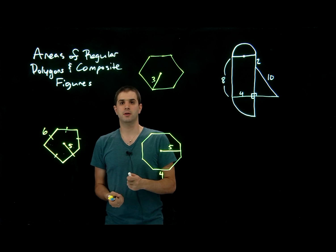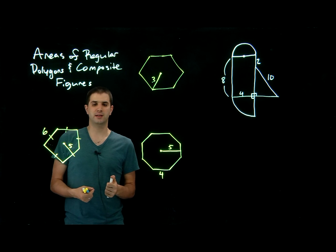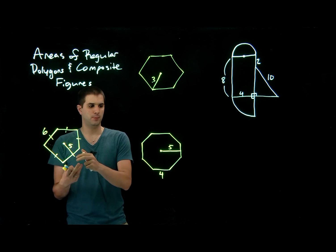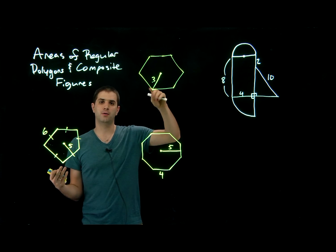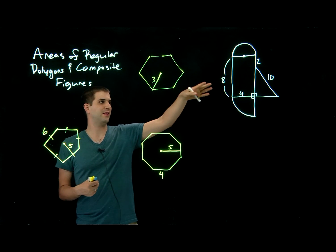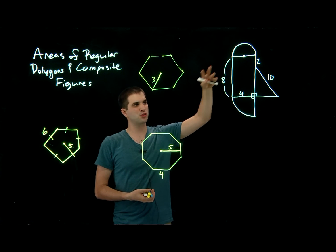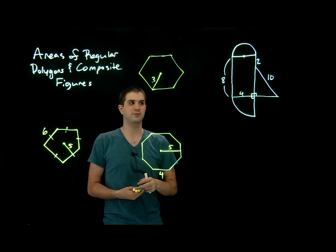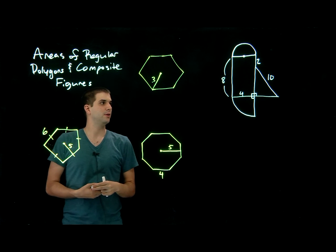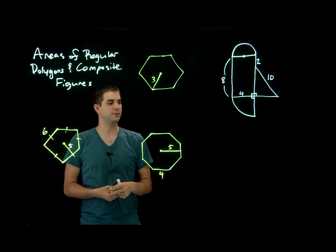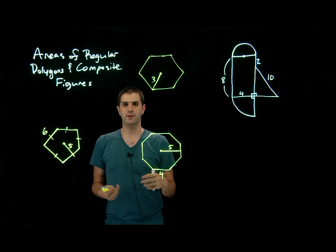In this video we're going to look at a few different examples, both of regular polygons and then of a composite figure, so we've got four shapes in there that we have to figure out the area of.